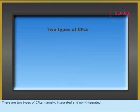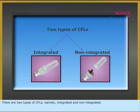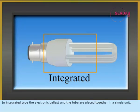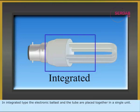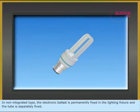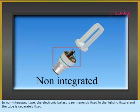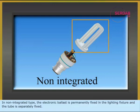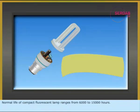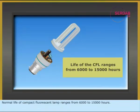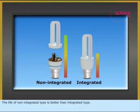There are two types of CFLs, namely integrated and non-integrated. In the integrated type, the electronic ballast and the tube are placed together in a single unit. In the non-integrated type, the electronic ballast is permanently fixed in the lighting fixture and the tube is separately fixed. The normal life of a compact fluorescent lamp ranges from 6,000 to 15,000 hours, and the life of the non-integrated type is better than the integrated type.